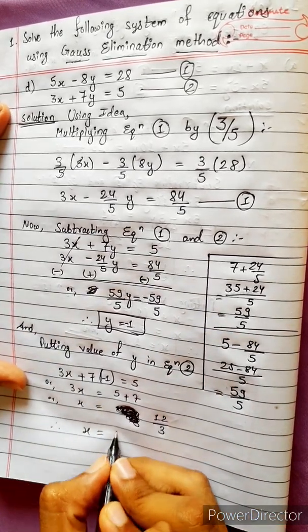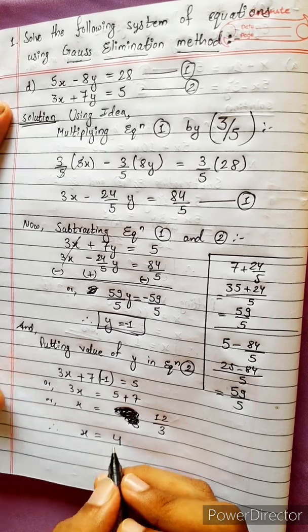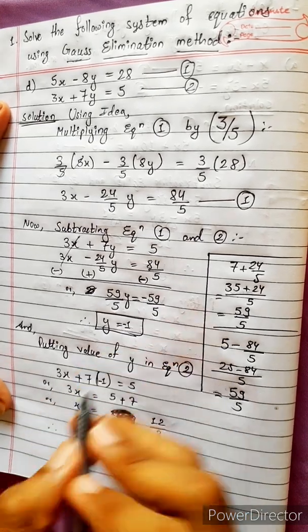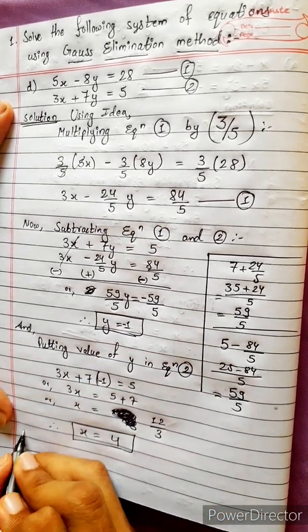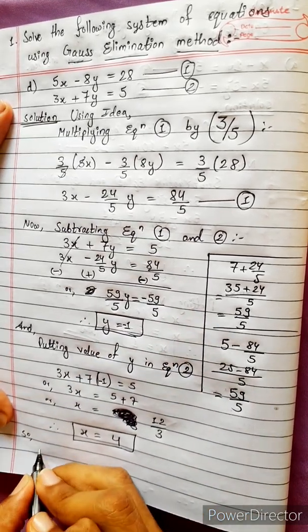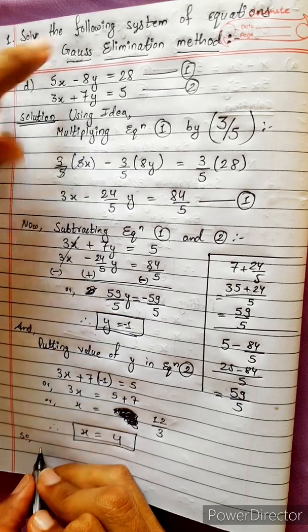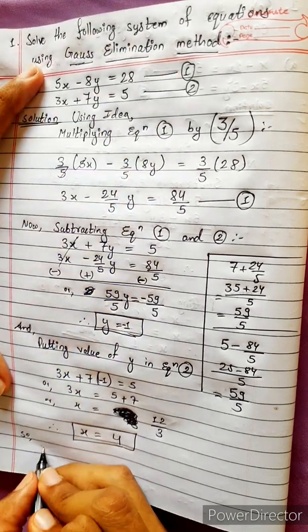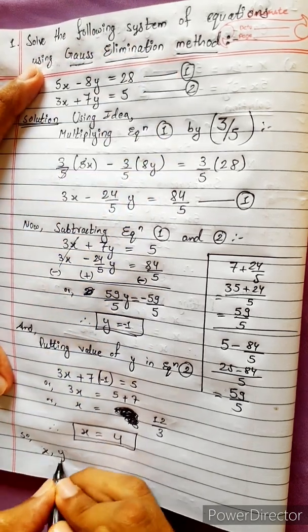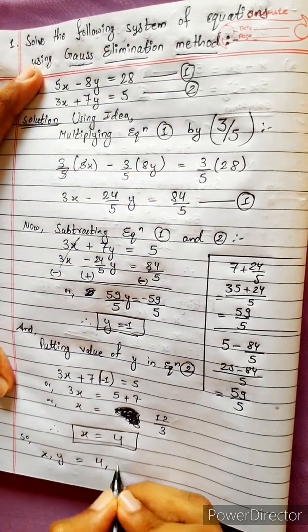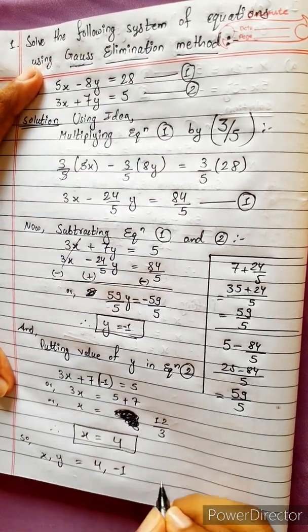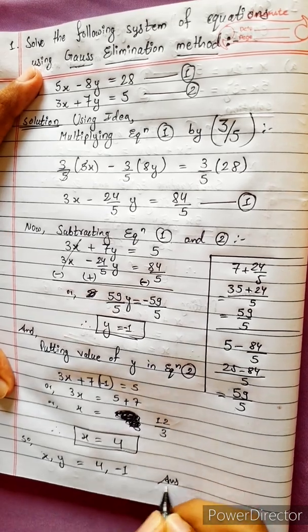Therefore, x equals 12 divided by 3, which is 4. So the solution to the system of equations is x comma y equals 4 comma minus 1. That is our answer.